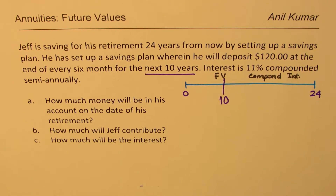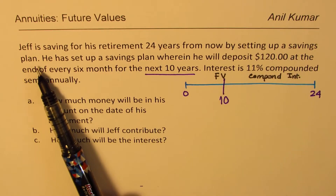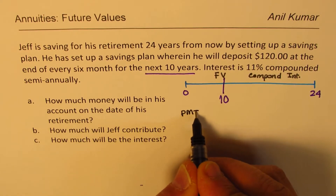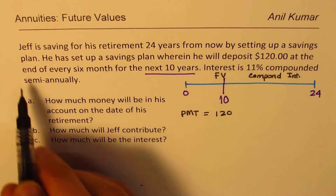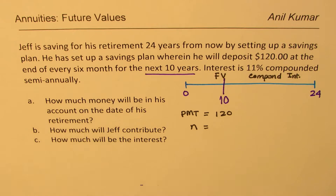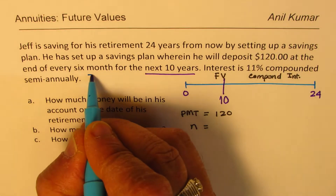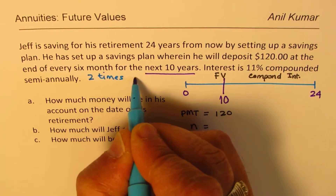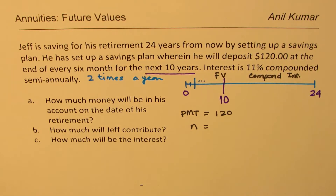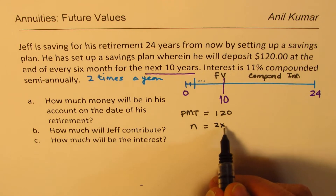Jeff deposits $120 at the end of every 6 months for the next 10 years. Since payments are semi-annual, that is 2 times per year. So the number of deposits is 2 times 10, which equals 20 deposits total.